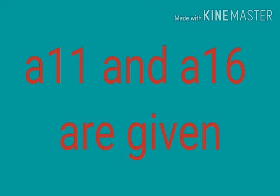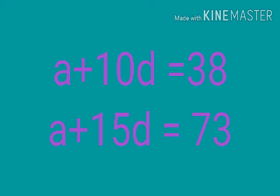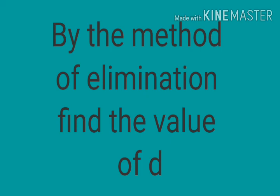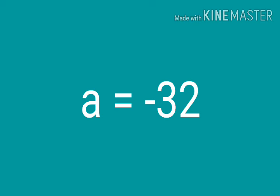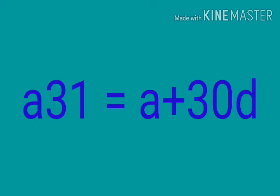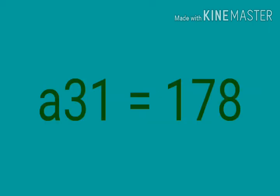The 11th term and 16th term were given, so we wrote the equations and used the elimination method. By doing the elimination method we get the value of one variable. Here we got D equal 7, substituted in another equation to get A, then found the 31st term using A plus 30D.